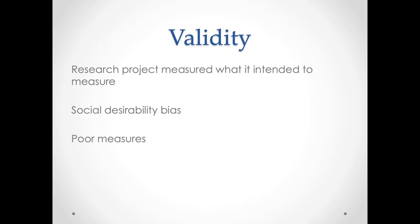Ideally, surveys should be answered anonymously. It's also important to be careful about wording — don't use leading statements like 'do you agree with most Americans that,' because you're introducing social desirability. You might also want to ask people to respond alone so they aren't influenced by the presence of others. We can also have the problem of poor measures — whether or not the thing we operationalize is a good measure. Both of these address validity.